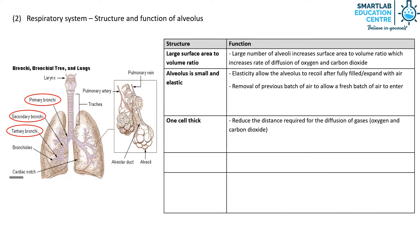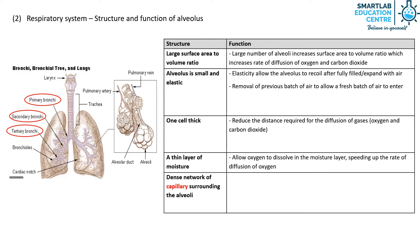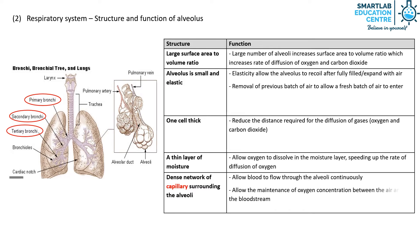Fourthly, the alveolus has a thin layer of moisture. This allows oxygen to dissolve in it, which speeds up the rate of diffusion of oxygen. Lastly, there is a dense network of capillaries surrounding the alveoli. This enables blood to flow through the alveoli continuously, which allows the maintenance of the oxygen concentration between the air and the bloodstream.